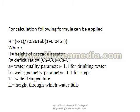R is the deficit ratio, calculated as: (saturated concentration − initial concentration) / (saturated concentration − required concentration). A is the water quality parameter — for drinking water, A = 1.1. For wastewater and other types of water, this factor will be different.